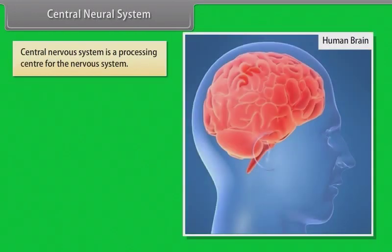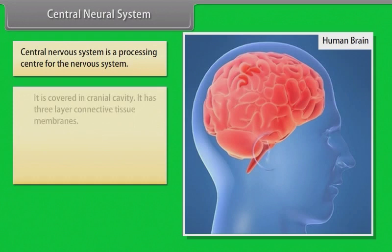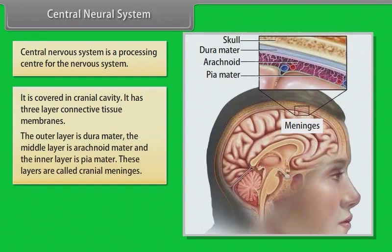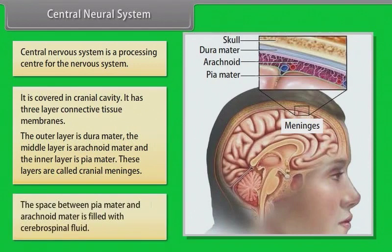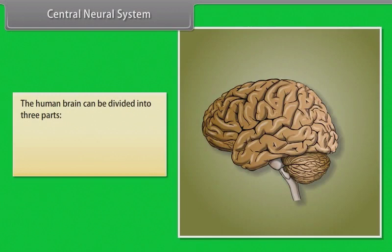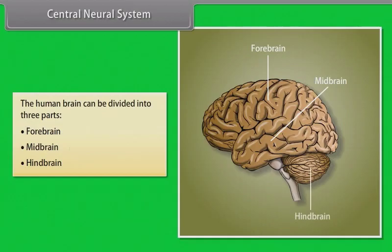The central nervous system is a processing center for the nervous system, covered in the cranial cavity. It has three-layer connective tissue membranes: the outer duramater, the middle arachnoid matter, and the inner pia matter, collectively called cranial meninges. The space between pia matter and arachnoid matter is filled with cerebrospinal fluid. The human brain can be divided into three parts: forebrain, midbrain, and hindbrain.